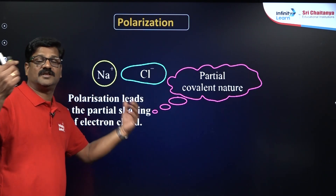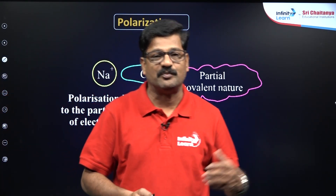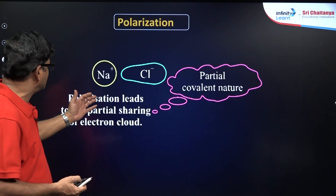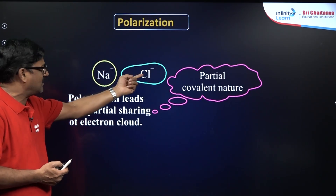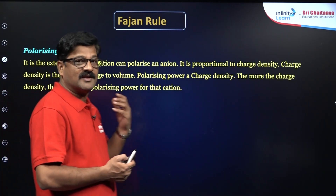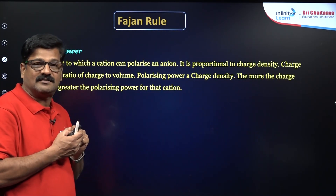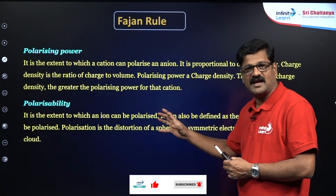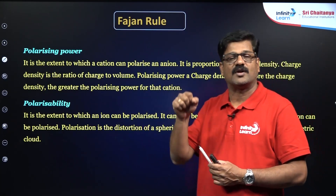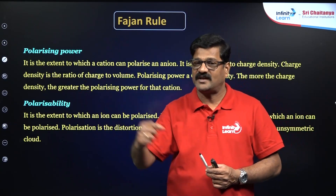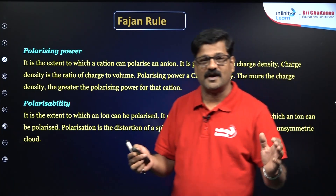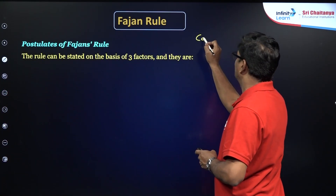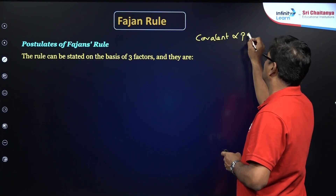Fajan's Rule says: more the polarization, more is the pulling of electrons, and more is the covalent character. This is based on polarizing power and polarizability. Polarizing power is the power of the cation to attract the anion. Polarizability is the ability of the anion to get polarized. So polarizing power is the character of the cation and polarizability is the character of the anion. Covalent character is directly proportional to polarization.